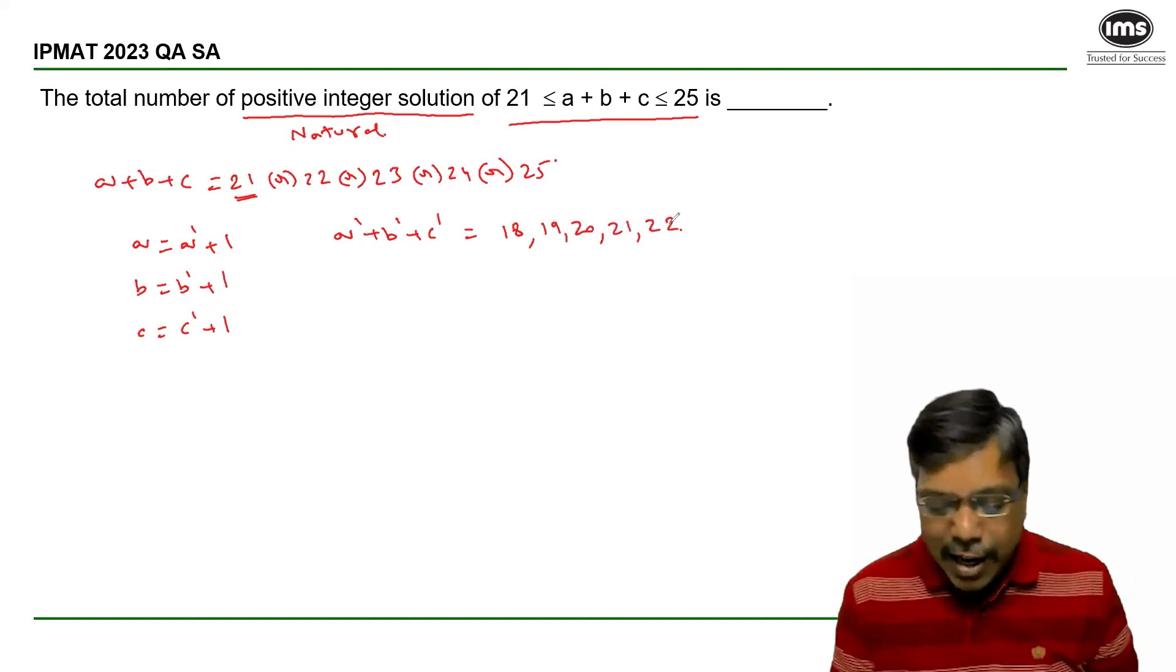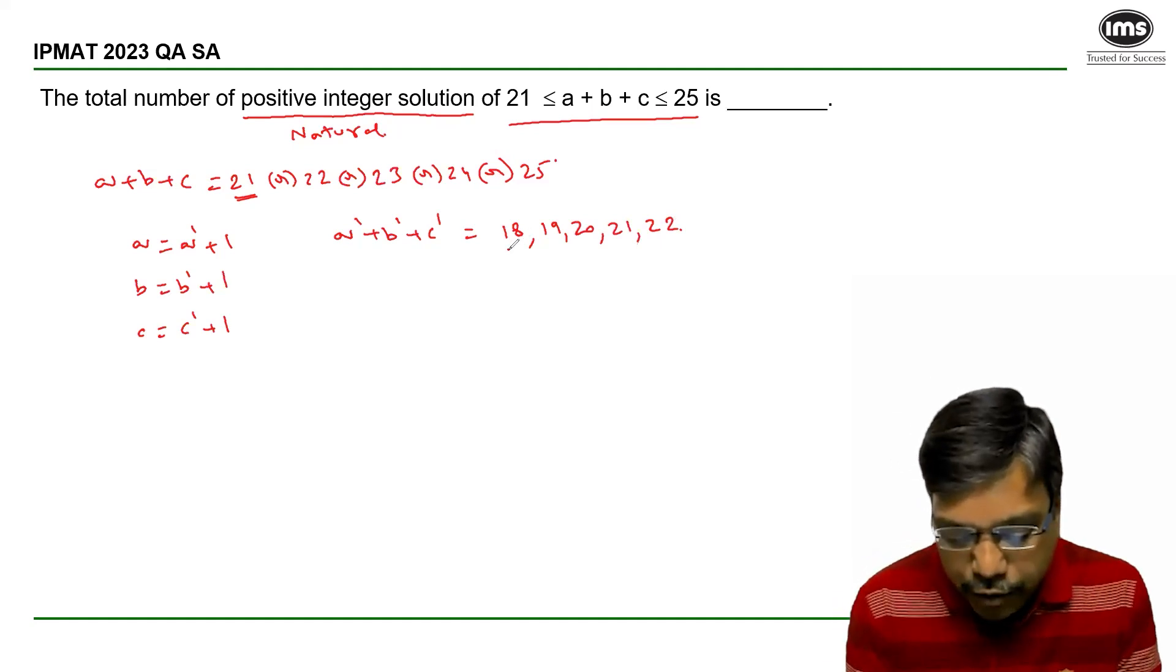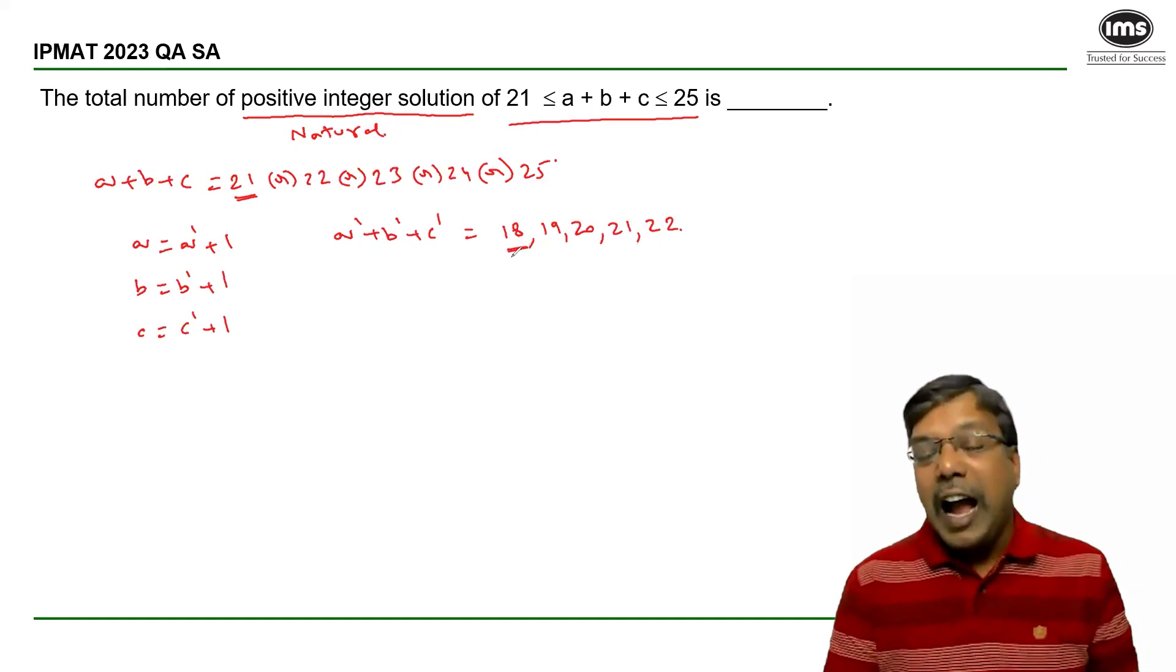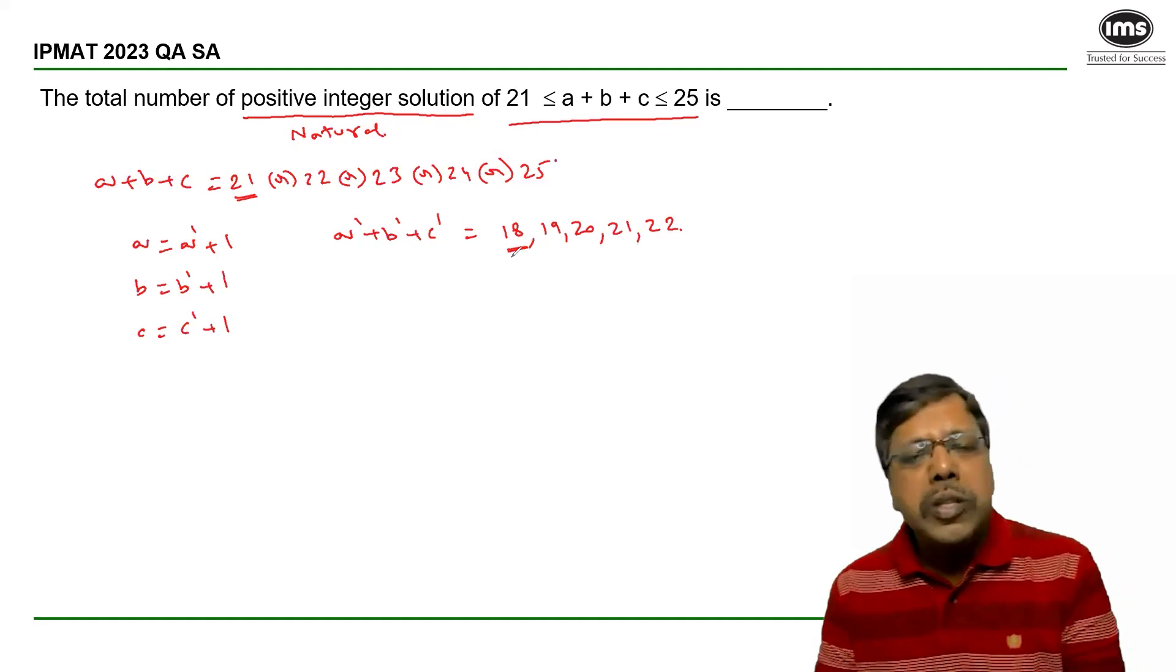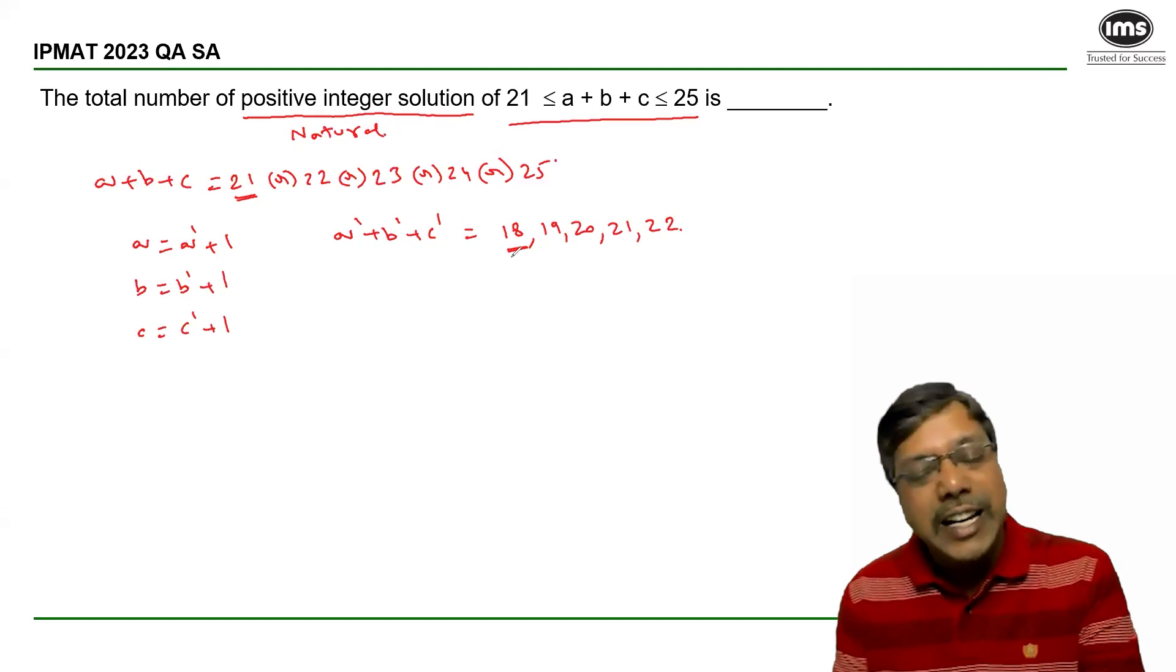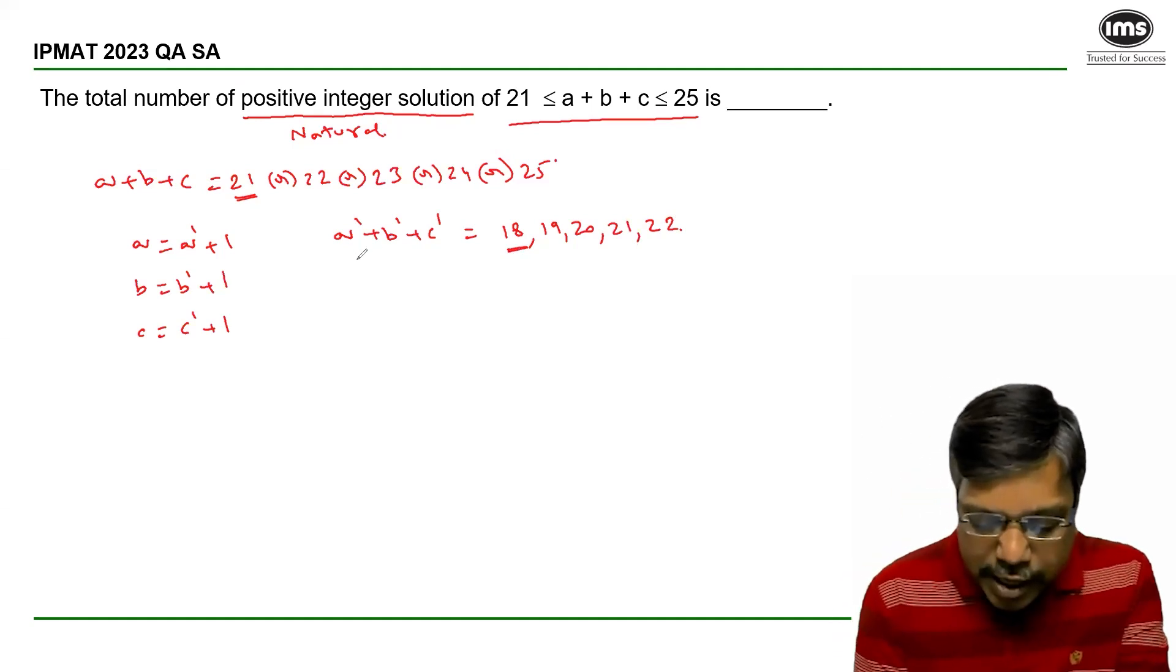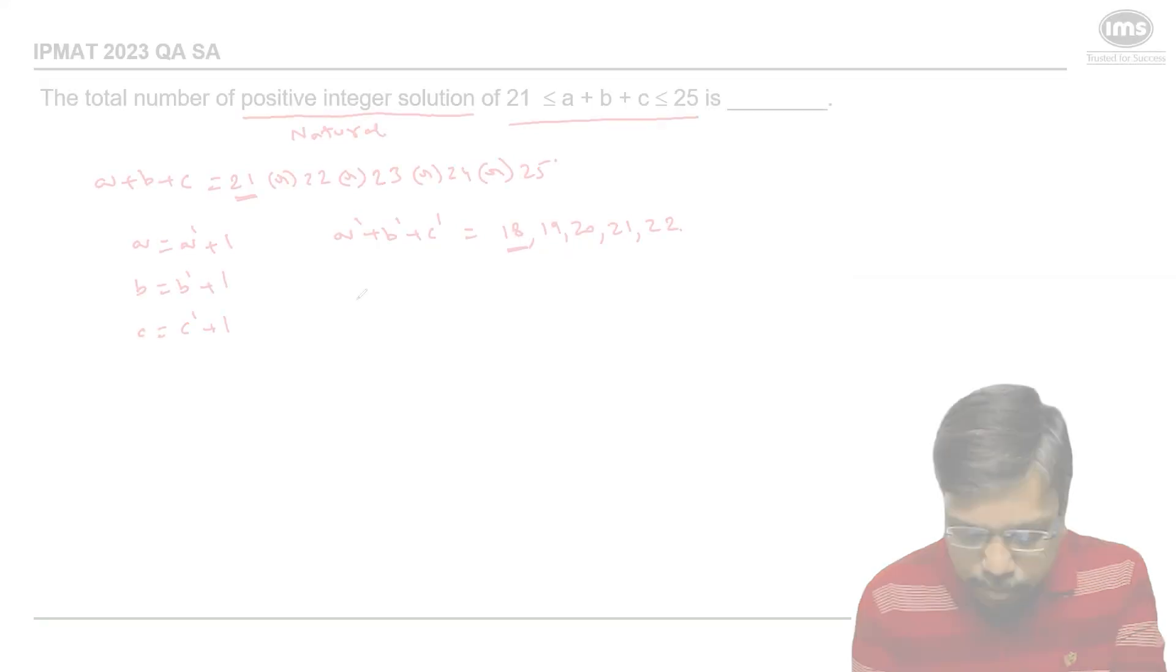Now, the theory of partitioning can be applied. If I take, for example, 18, I need to divide 18 into 3 groups where some of them can be empty, meaning A', B', C' can be zeros, which is possible in 18 + 3 - 1.